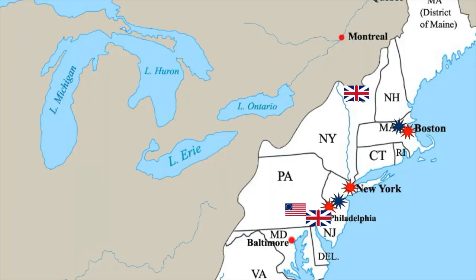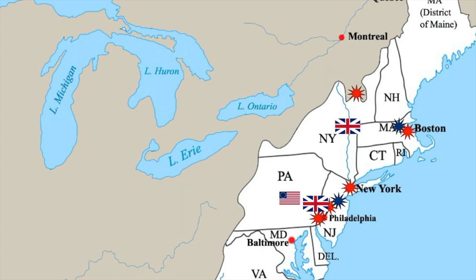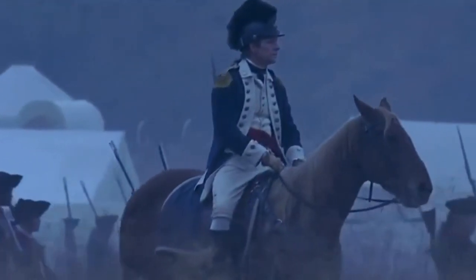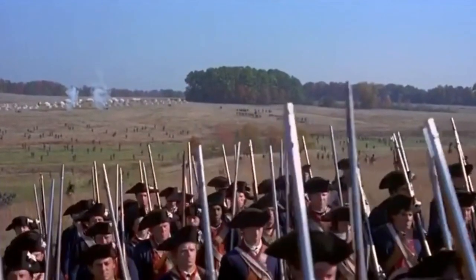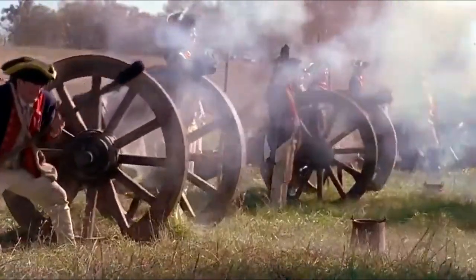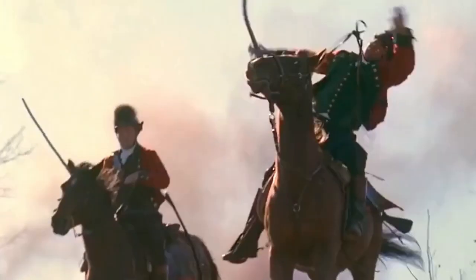Washington tried to hit back on October 4th at Germantown but was again beaten and forced to withdraw to Valley Forge for the winter. However, the rapid move south had left Burgoyne's force dangerously exposed. At Freeman's Farm, the American forces under General Horatio Gates and Benedict Arnold pressed home the advantage. On September 19th, in what became known as the First Battle of Saratoga, Gates' force dealt a heavy blow to the British. Then on October 7th at Bemis Heights, Arnold's force delivered a knockout blow in the Second Battle of Saratoga.